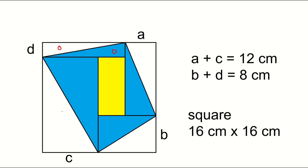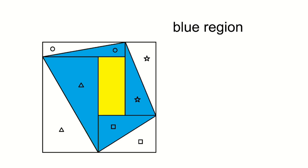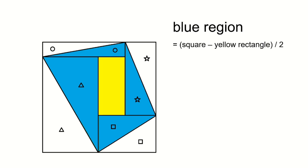This triangle and this triangle are the same; this triangle and this triangle are the same. So, the area of the blue region is calculated by: square minus yellow rectangle, then divided by 2.